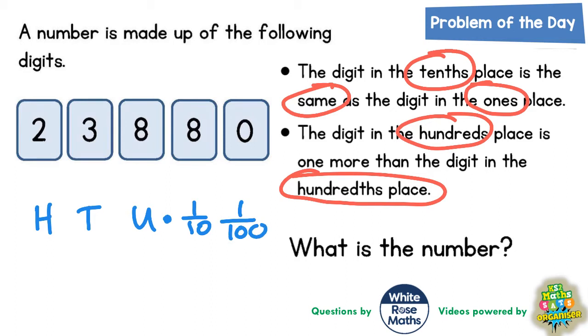Now let's go back to the clues. The digit in the tenths place, so the tenths place is this one, is the same as the digit in the ones place. Well ones is another word for units.